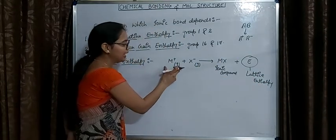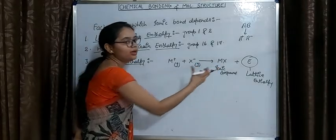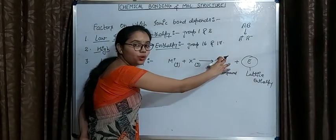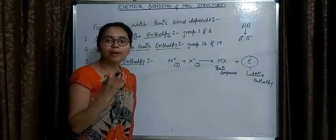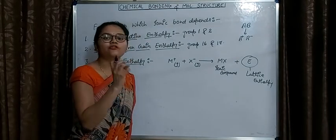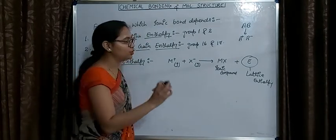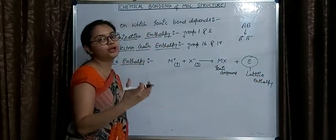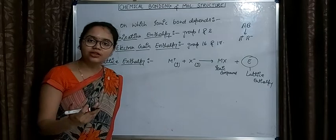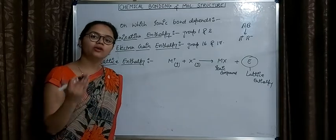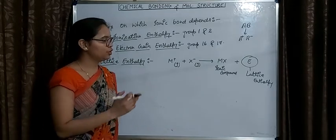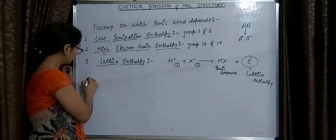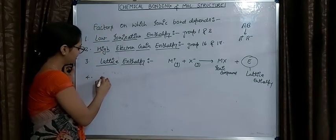If the value of lattice enthalpy is higher, it means the cation and anion will be packed in the compound very strongly. So a higher value of lattice enthalpy favors the formation of an ionic bond. This is the third factor.